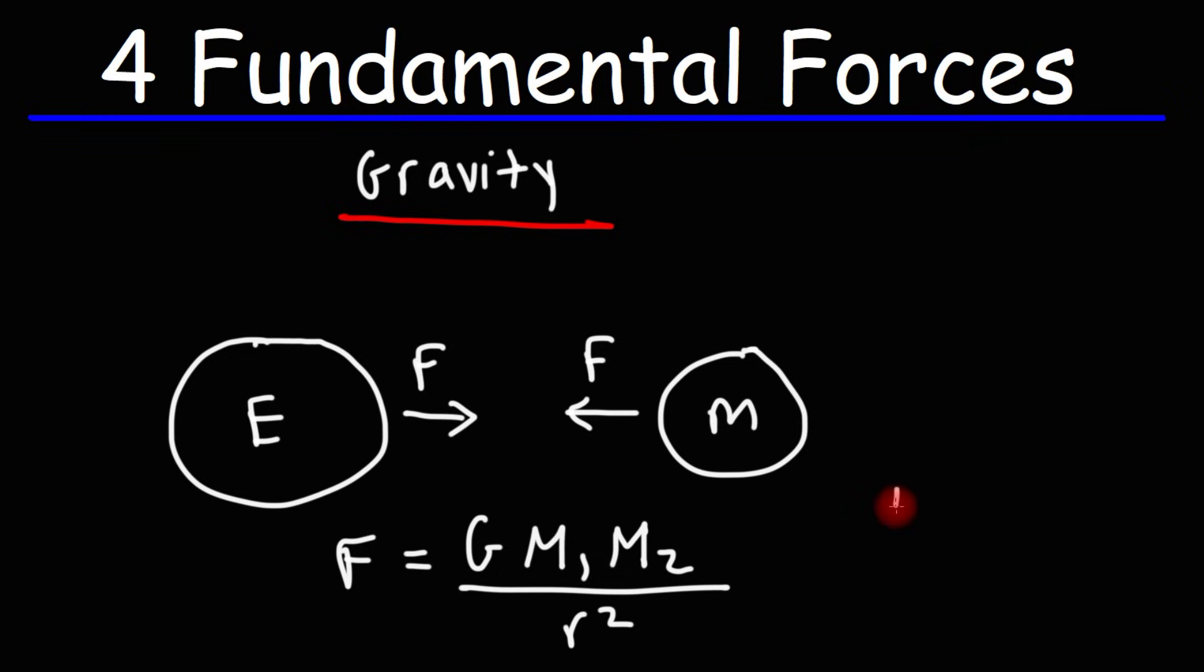As the masses of the planets increase, the gravitational force that they can exert on other planets will increase as well. Now, the distance, if you increase the distance between two objects, the gravitational force will decrease greatly.